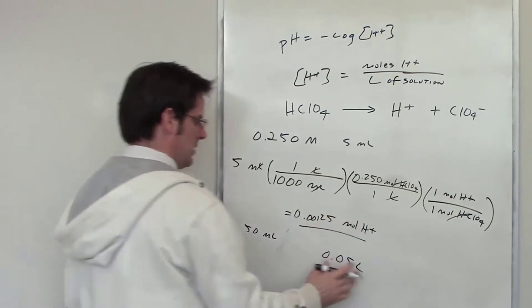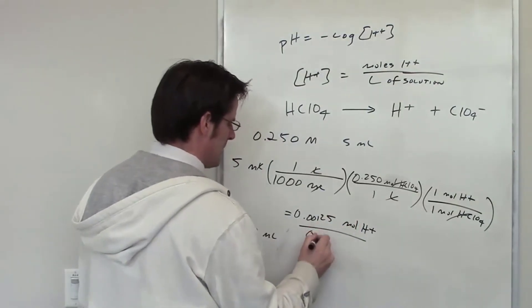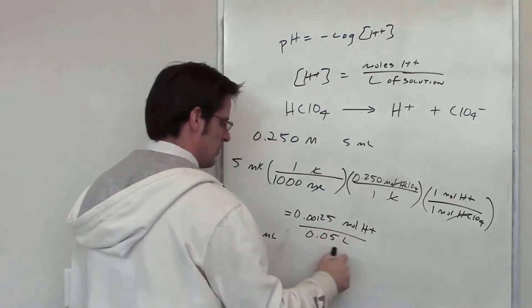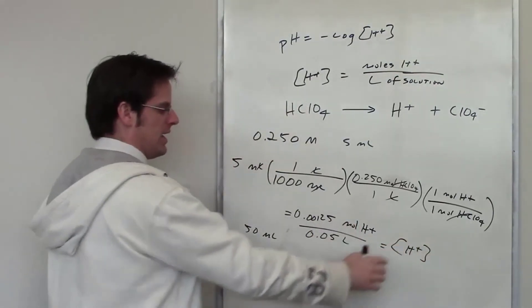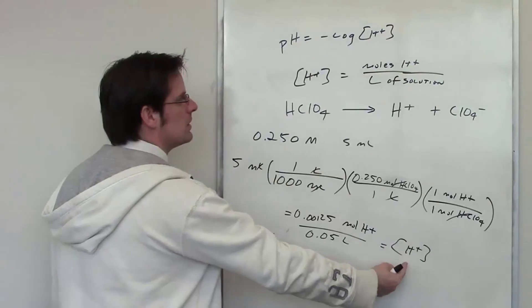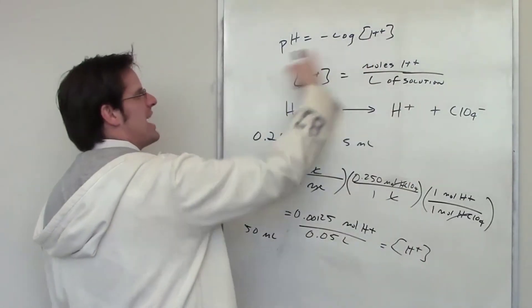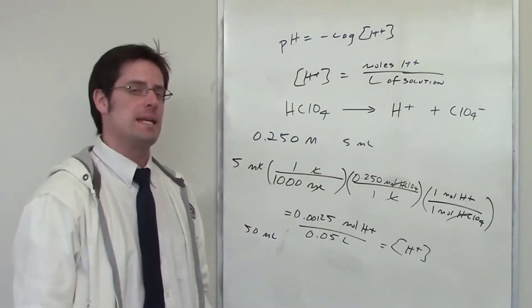So moles of hydrogen up here or moles of proton, I've got my total number of liters of solution is .05 liters. That is the concentration of H+. You can throw that into your calculator. You get that number, you then put it right here, and throw that into your calculator, and that will give you your final pH.